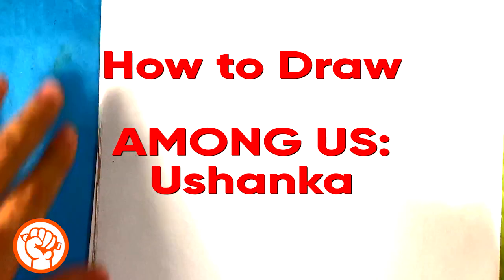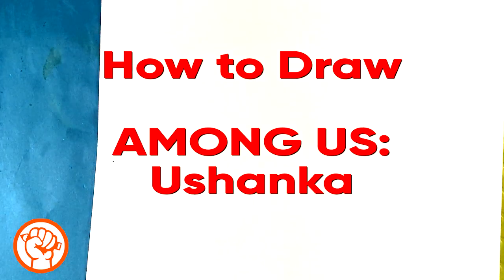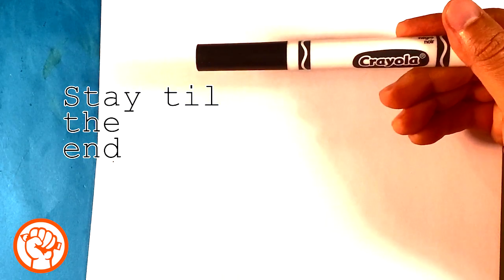Hey guys, what's up? How's it going? Today we're going to go over how to draw an Among Us character with an ushanka hat. It's kind of like one of those Russian hats or something like that. It's like furry. It's going to be real simple, easy, and for beginners. I'm going to be using this Crayola brand marker.